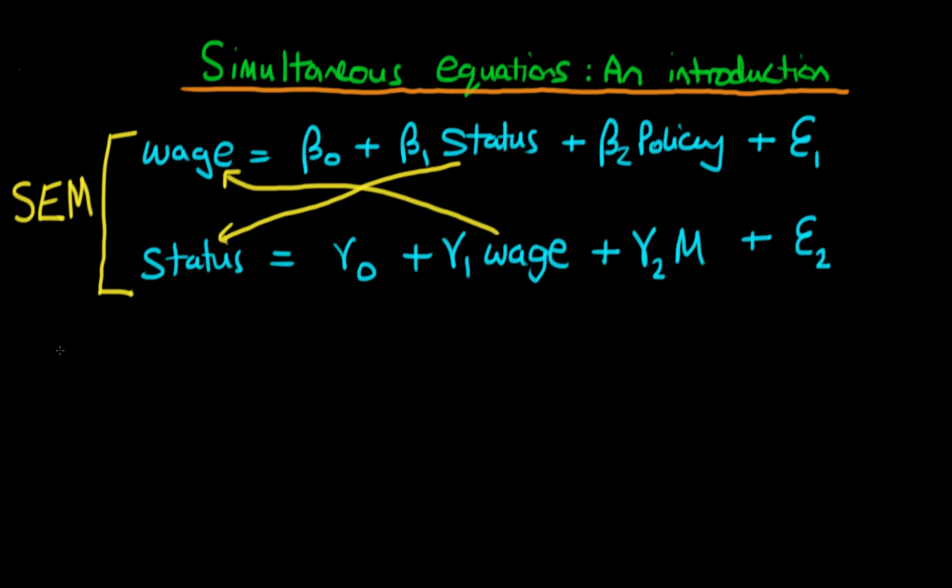So what's the problem with estimating these two above equations via OLS? Well, the issue is that we actually get something which is known as simultaneity bias. And all that means really is that we are having some bias in our estimates of the parameters, as a result of the fact that there is endogeneity within our models.